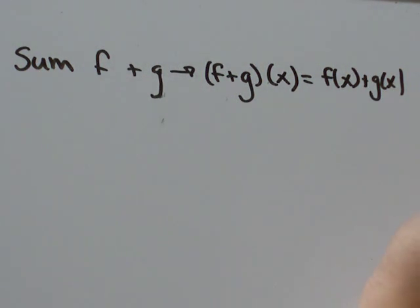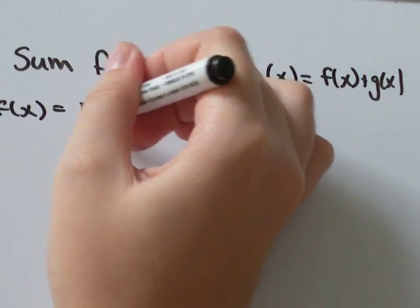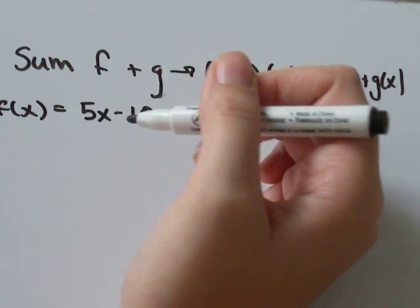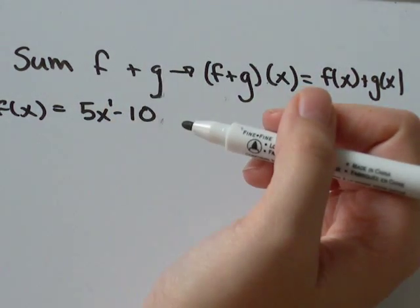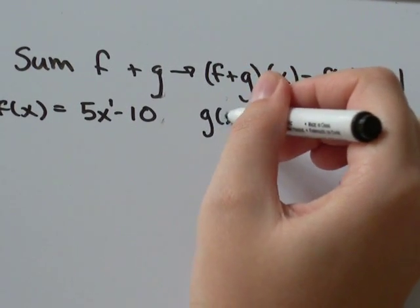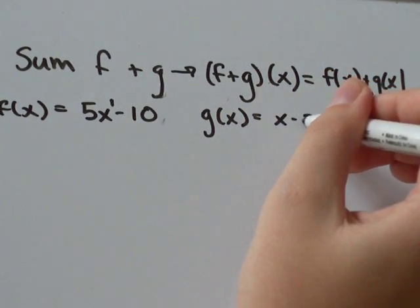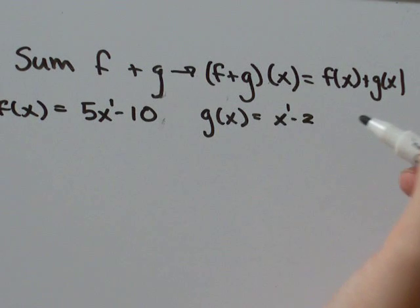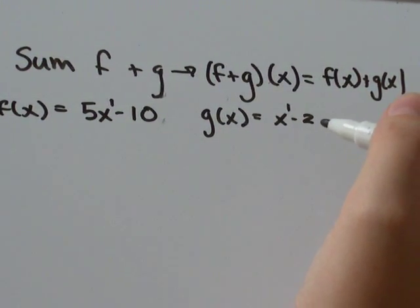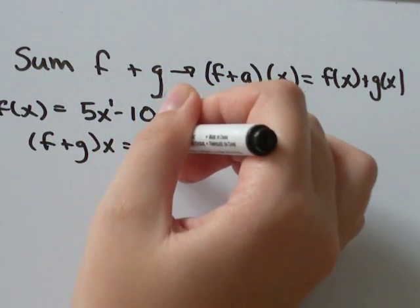If I had a question and it said that f of x was 5x minus 10, that would be a linear function, a straight line where the exponent on x is just 1. And then I had g of x equals x minus 2, another linear function, the highest power on x in this case is 1. I want to find f plus g of x.